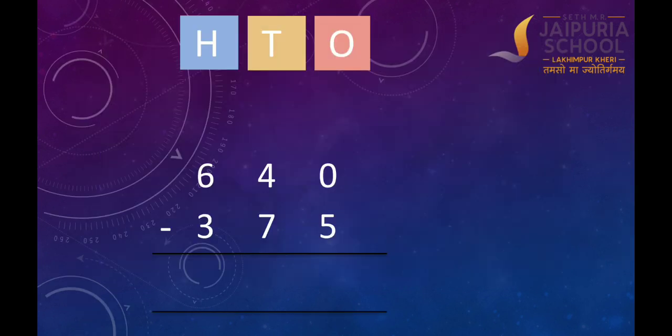Let us subtract 375 from 640. Look at the ones column. We have to subtract 5 ones from 0 ones, but we do not have enough ones to subtract 5.